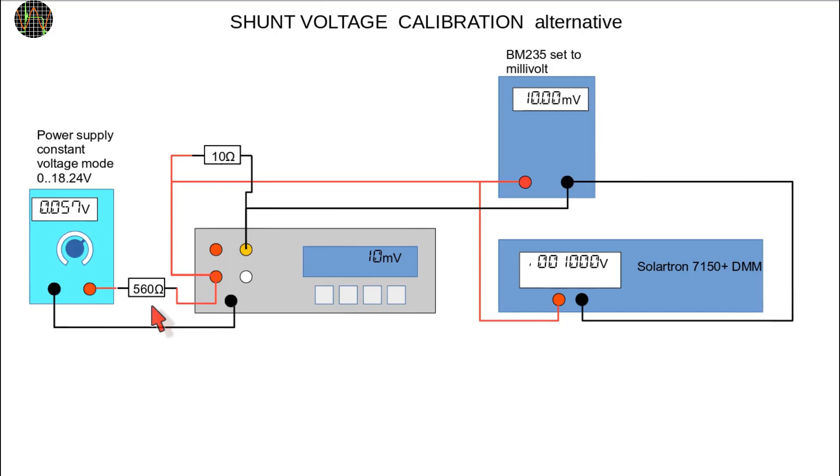The procedure is the same as before but in this circuit you need to adjust the power supply voltage instead of the current to get the target shunt voltage. In case you wonder, there is no need to enter the 10 ohm shunt into the caldata file.